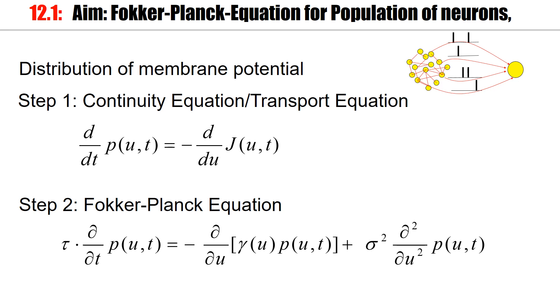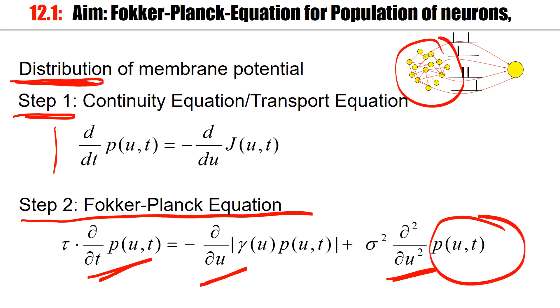So the aim for today is we think of a population of neurons. Different neurons have at each time step different membrane potentials. We will look at the distribution of membrane potentials across the population. And then in the first step, I will derive the so-called continuity equation, also called transport equation. And then in the second step, we will translate this into the Fokker-Planck equation, which has first-order derivatives and second-order derivatives. And again, this will be this distribution of membrane potentials. And then we will apply this for specific cases in the final lectures in this little series.